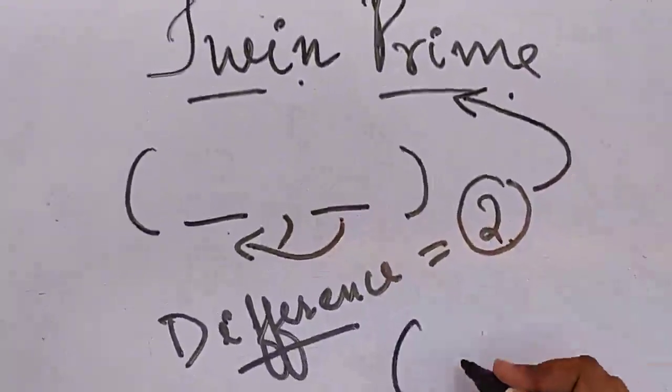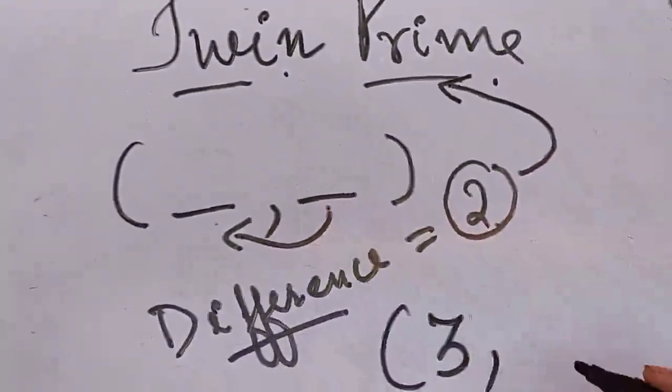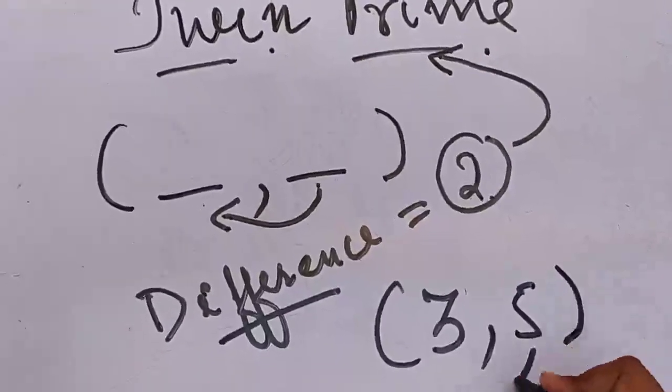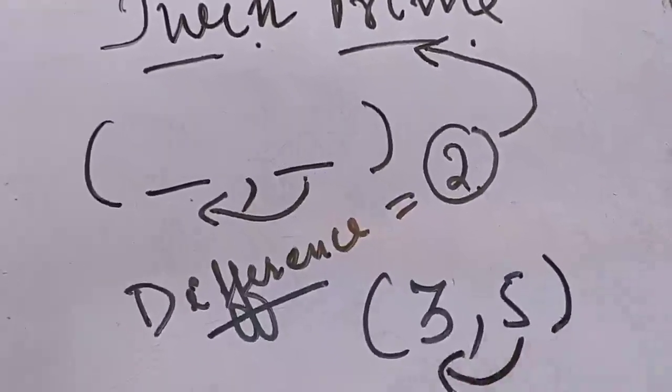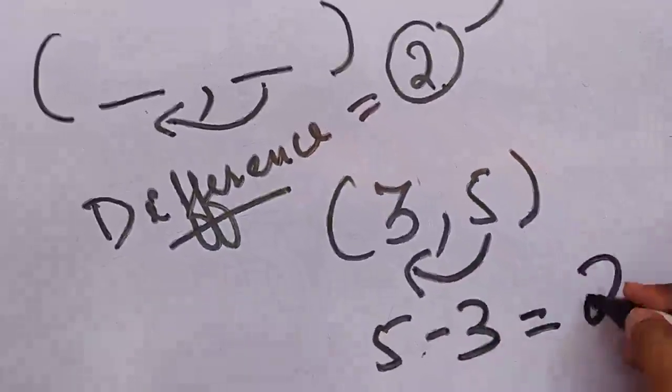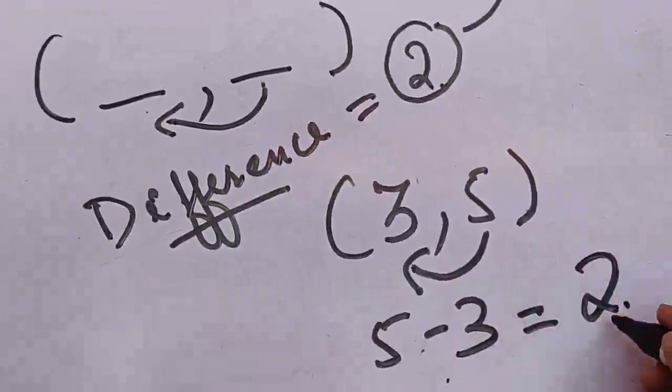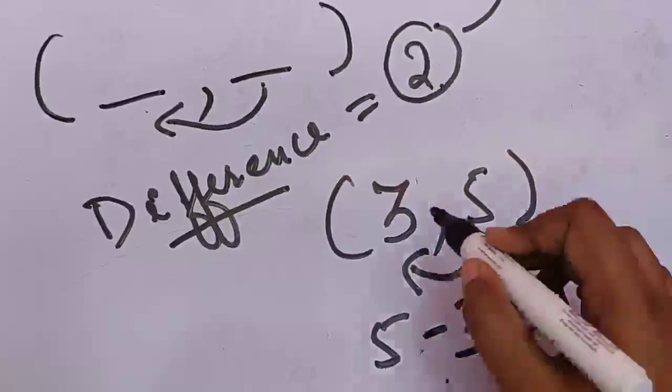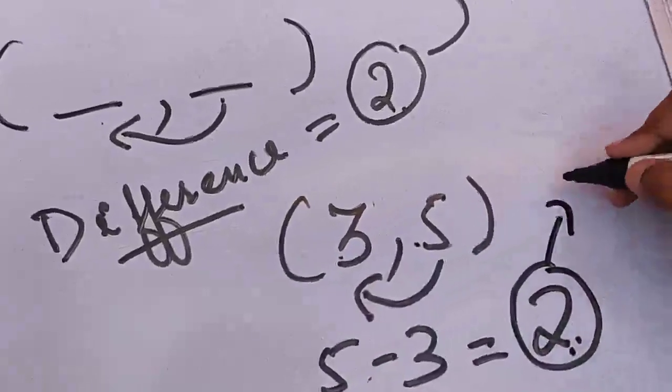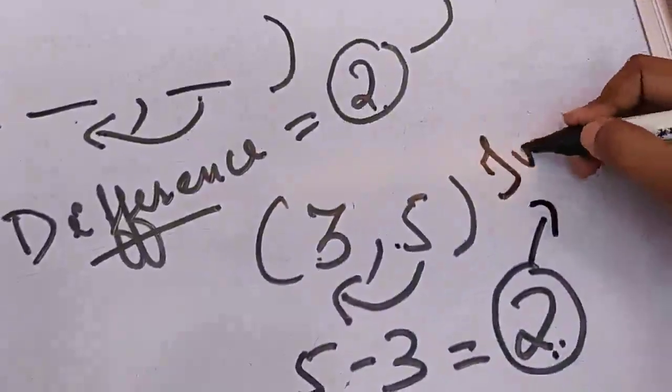Let's take an example. Is 3 prime? Yes, it is a prime number. Is 5 prime? Yes, it is also a prime number. So if I subtract these two, that means 5 minus 3, what will it give us? 2. 5 minus 3 is 2. So what difference did we get? These two are prime numbers. The difference of these two came out to be 2. Therefore, what did they become? Twin prime.